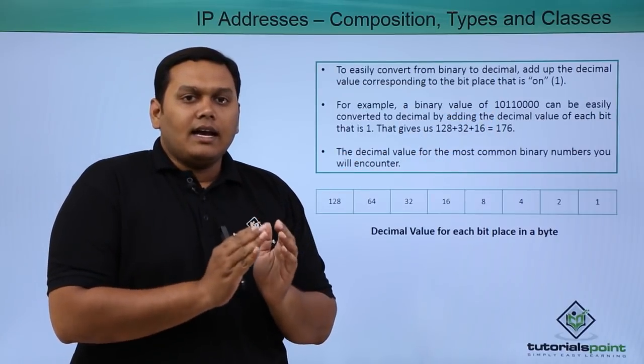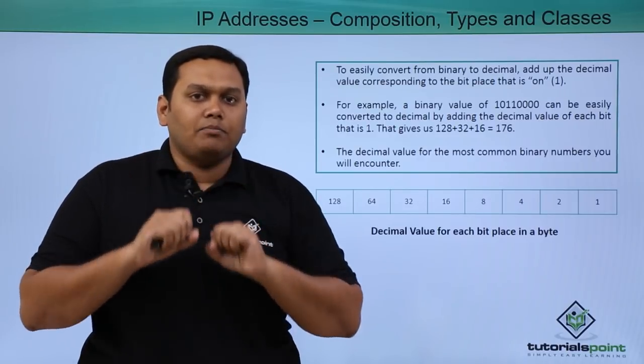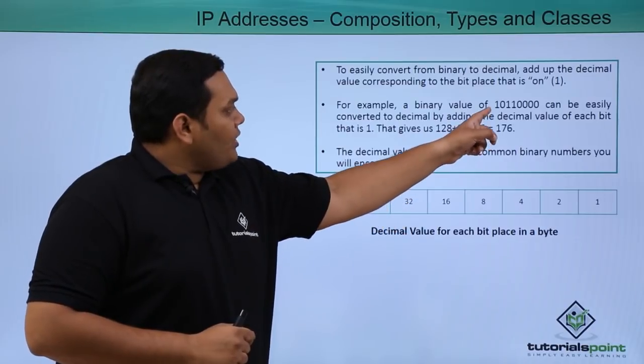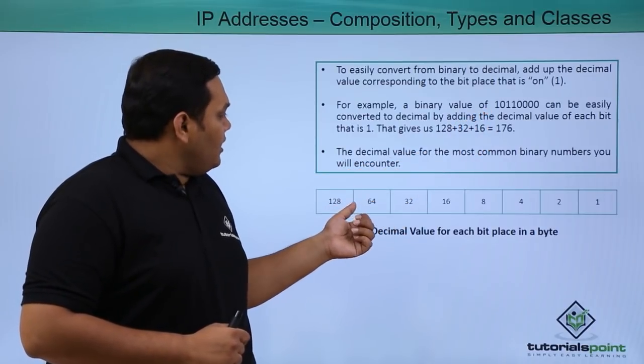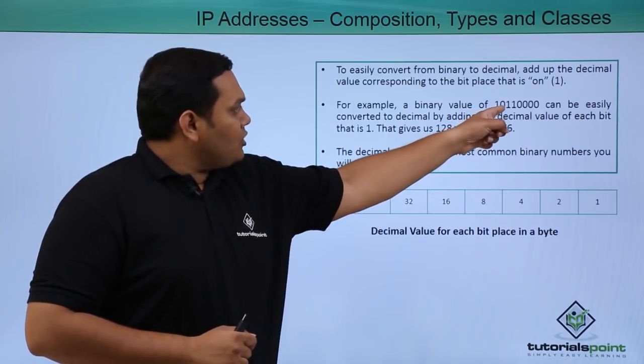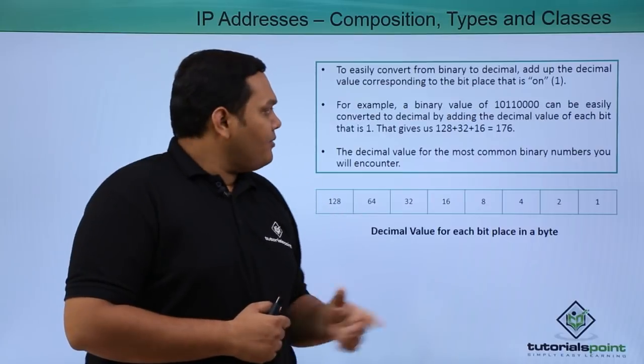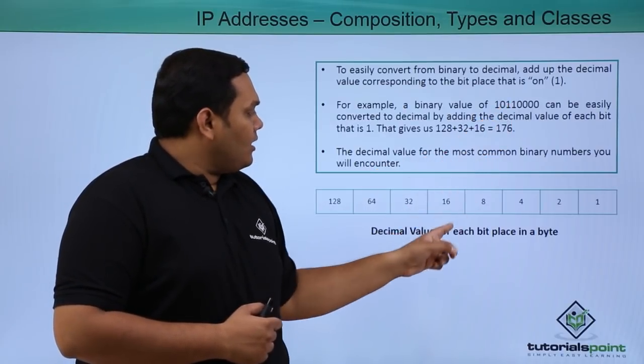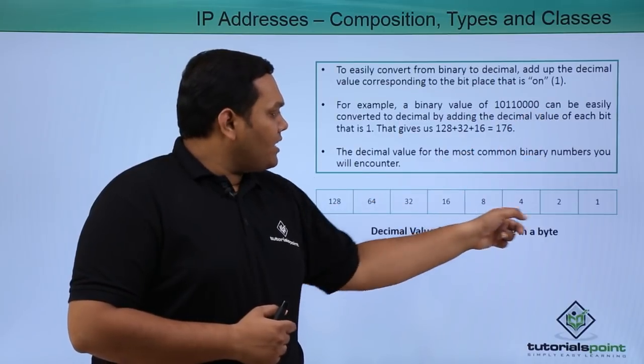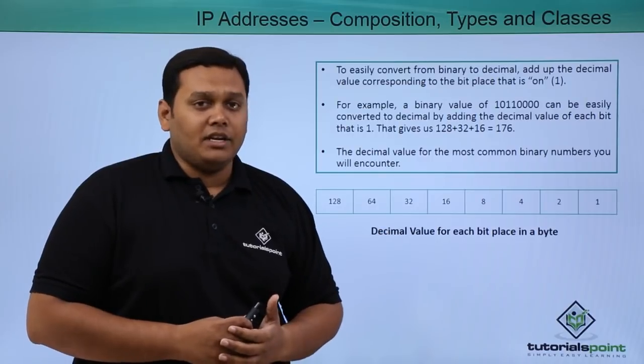You can see here how 128 has come. As we already discussed, wherever 1 is noted, we have to calculate that part. We have to ignore the 0 part. So 128 denotes 1 here, 64 is 0, so the next one is 32. 32 is calculated the same way, the next one 16 is 1, so 16 is calculated. The rest are all zeros. This is how 176 has come in place here.